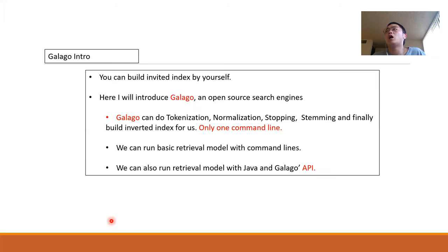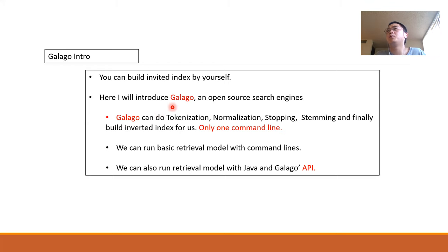Now, with the previous steps — stopping, stemming — you can build the Inverted Index by yourself. However, there are many open-source search engines that can help you do it. For example, Galago. Galago can do tokenization, normalization, stopping, stemming, and finally build the Inverted Index for you, with only one command line. You can also run some basic retrieval models using Java code.